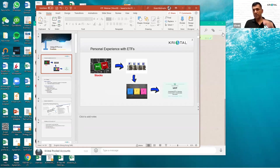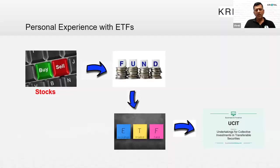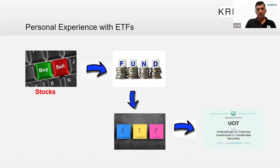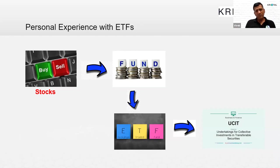I'm just going to do one simple slide about my personal experience with ETFs — why I started using them. I started investing about 25 years ago, like everybody else, beginning with buying stocks and shares. There's a thrill associated with buying stocks, but a lot of biases creep in. People buy based on familiarity — for example, many people are interested in buying Tesla right now because of familiarity with Elon Musk. So there's always an emotional bias to buying stocks, and that's how everybody starts.